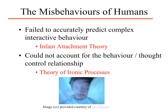Nor can behaviorism account for some of the behavior-thought-control relationships. For example, tonight try thinking about going to sleep — think about sleep as you're falling asleep and see if you actually sleep. The theory of ironic processes suggests that the more that we think about sleep, the less likely we will fall asleep. What we're doing is checking our system: 'Have we fallen asleep yet? Nope. Have we fallen asleep now? No.' By doing that, we keep thinking and stay awake.